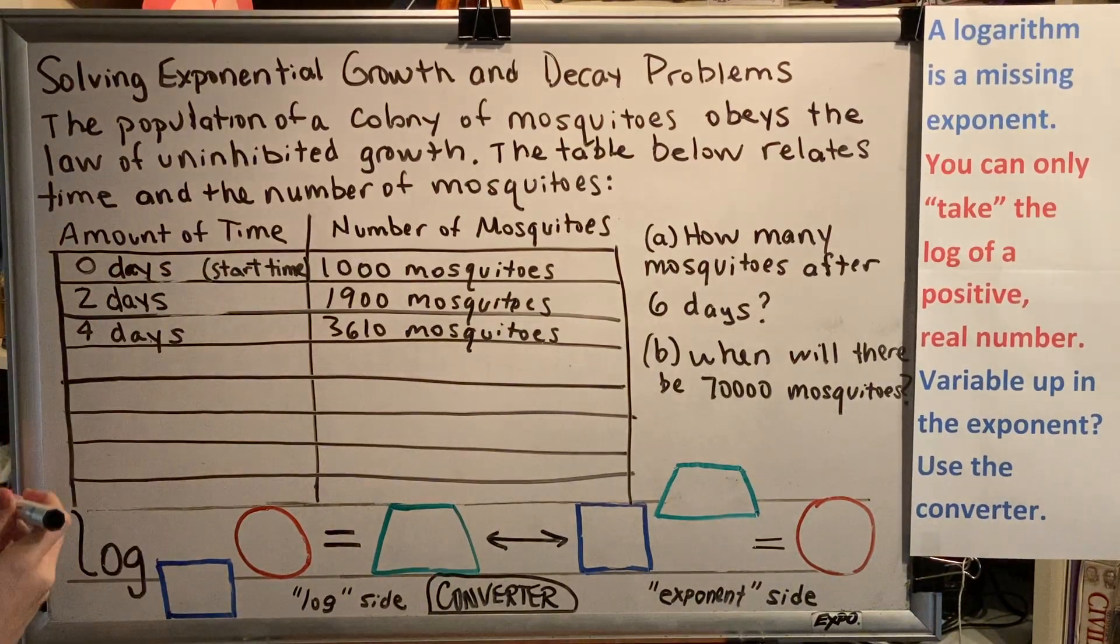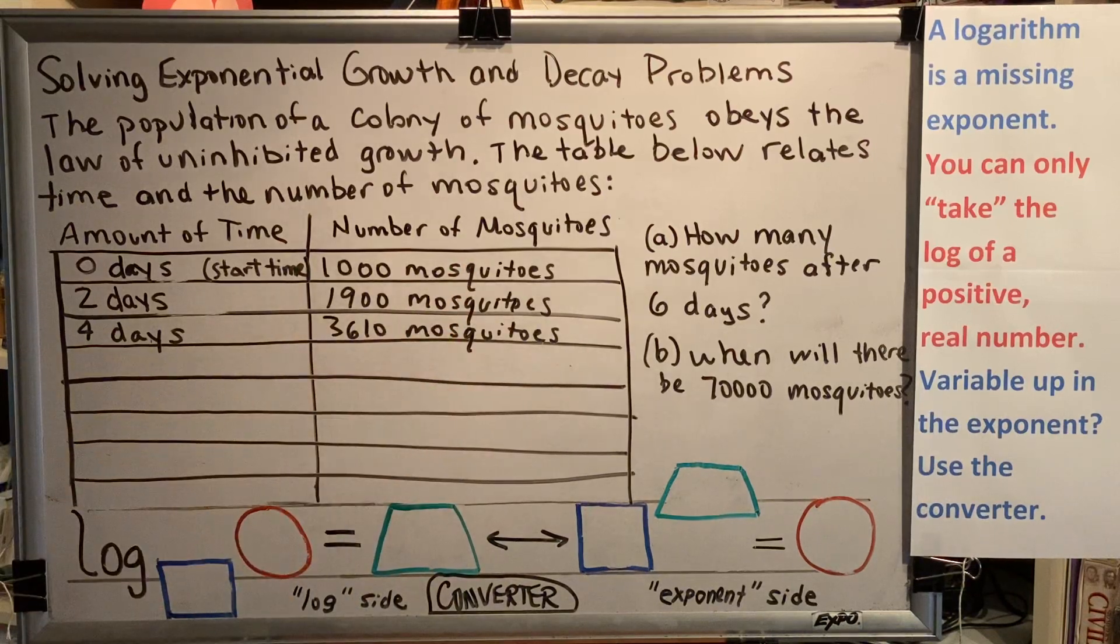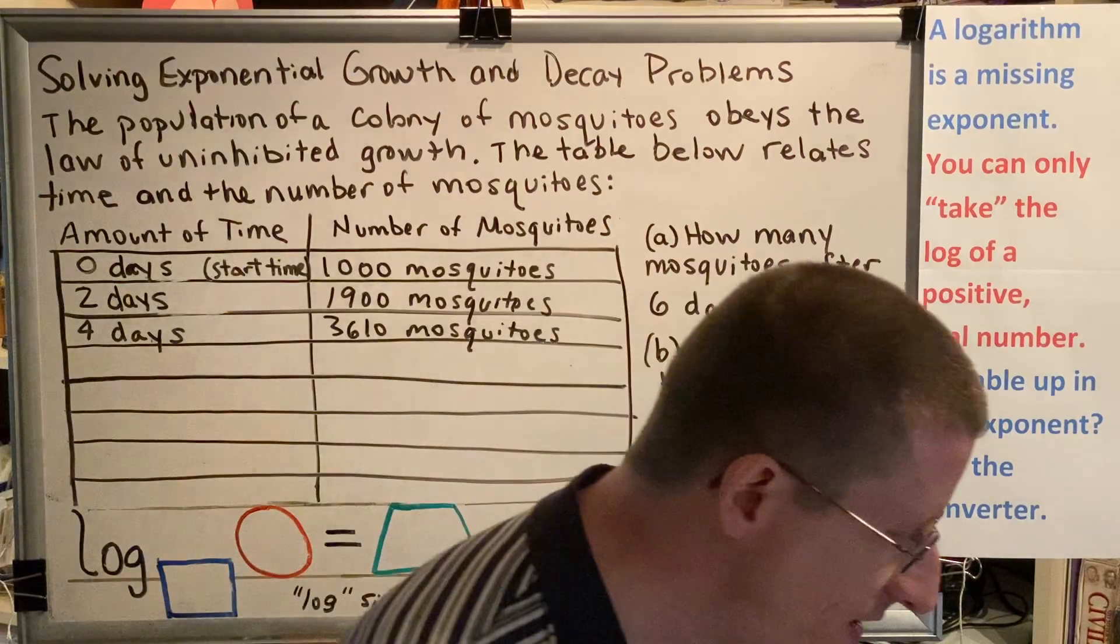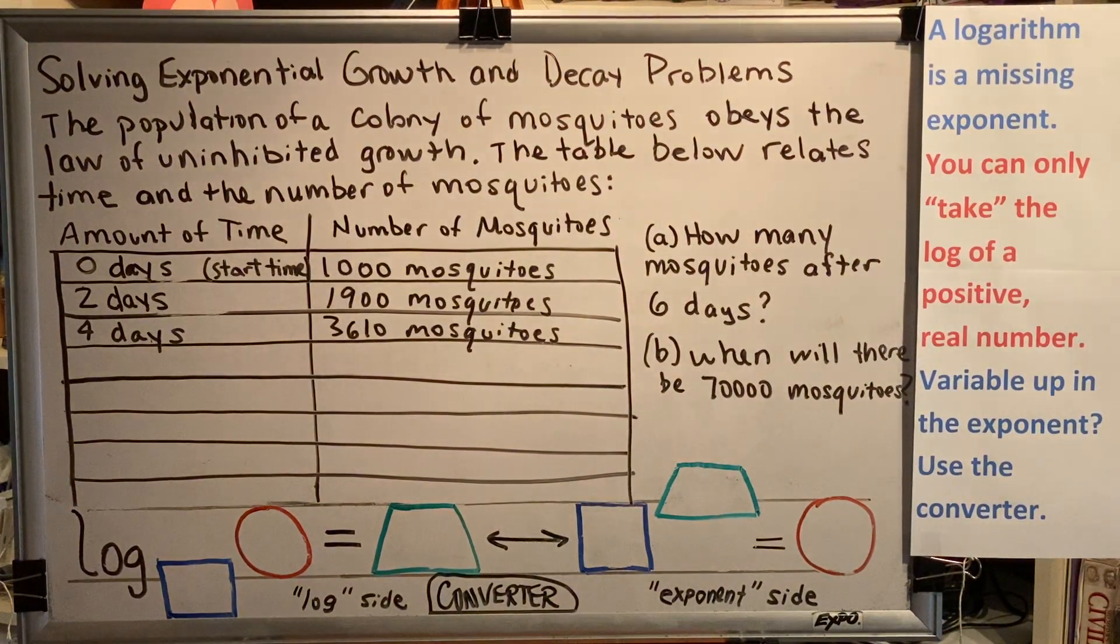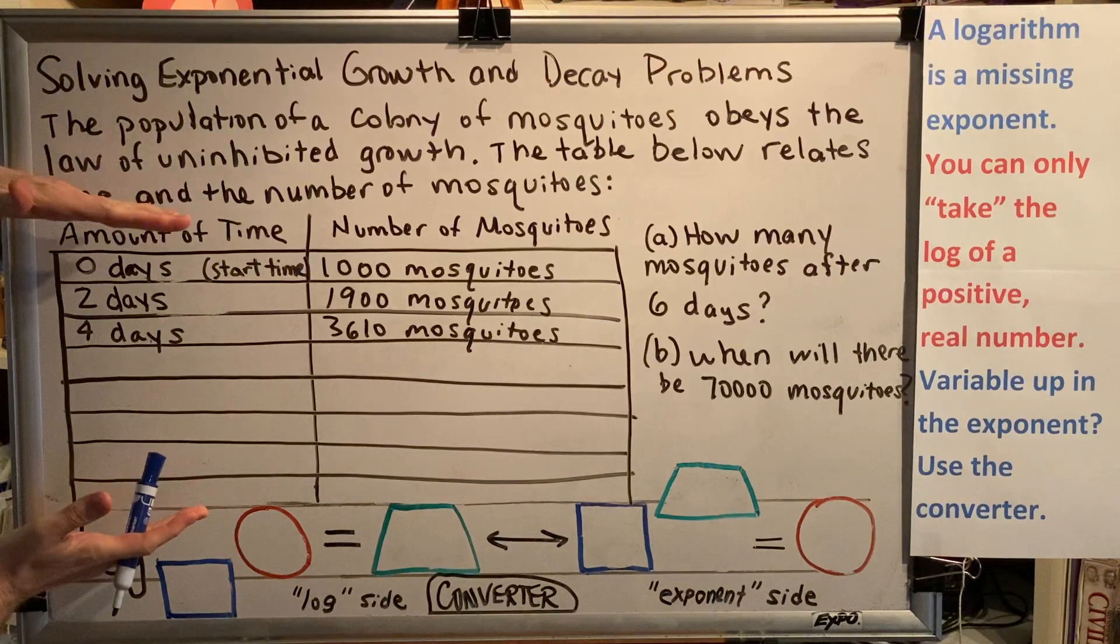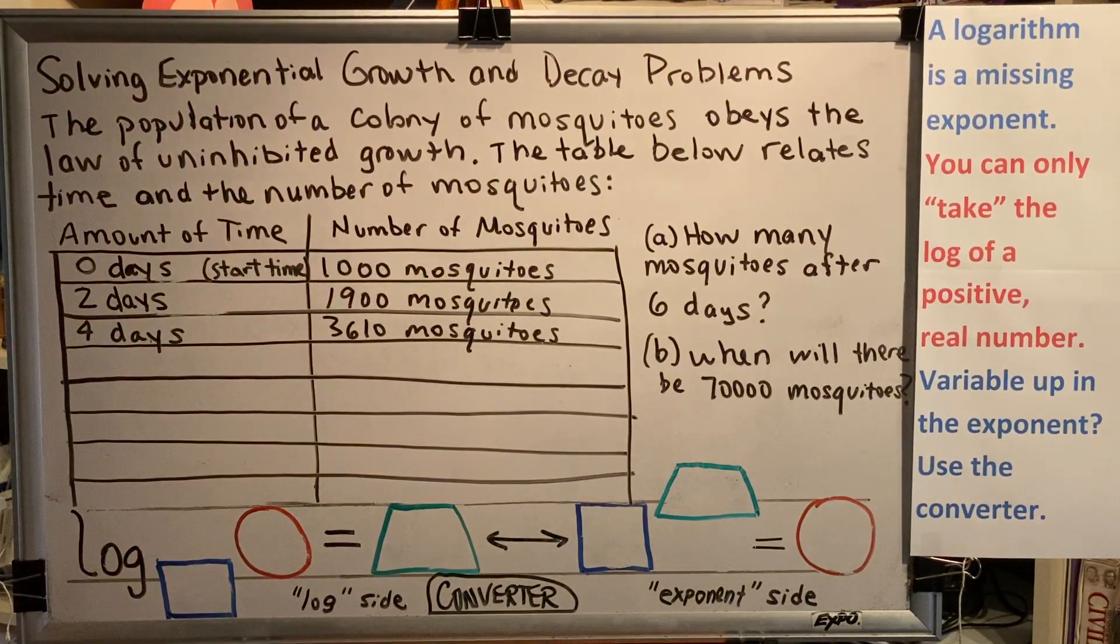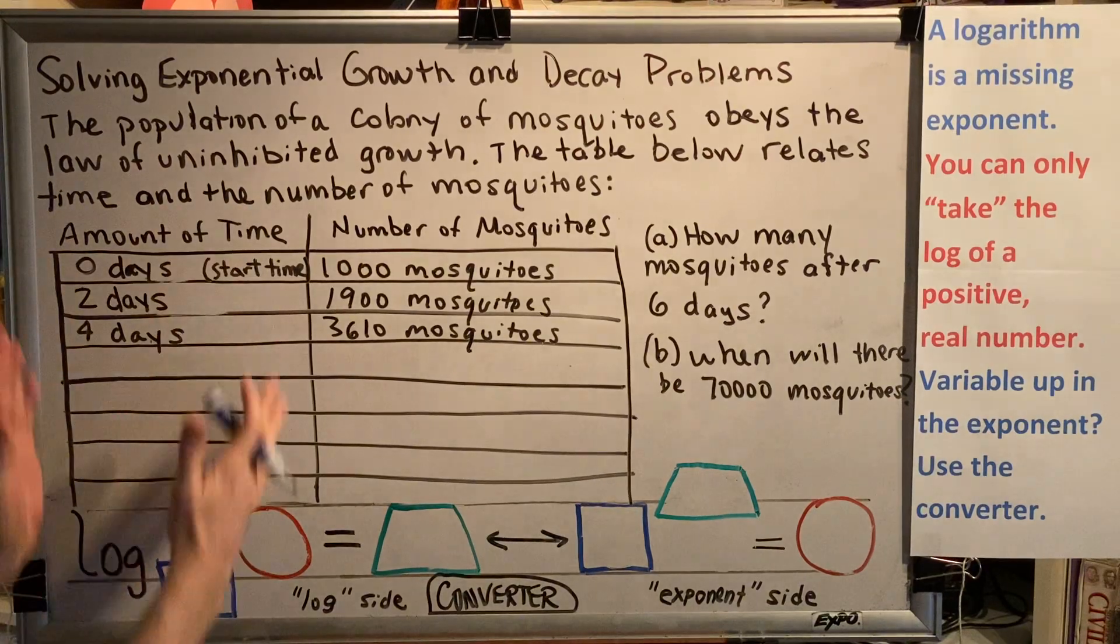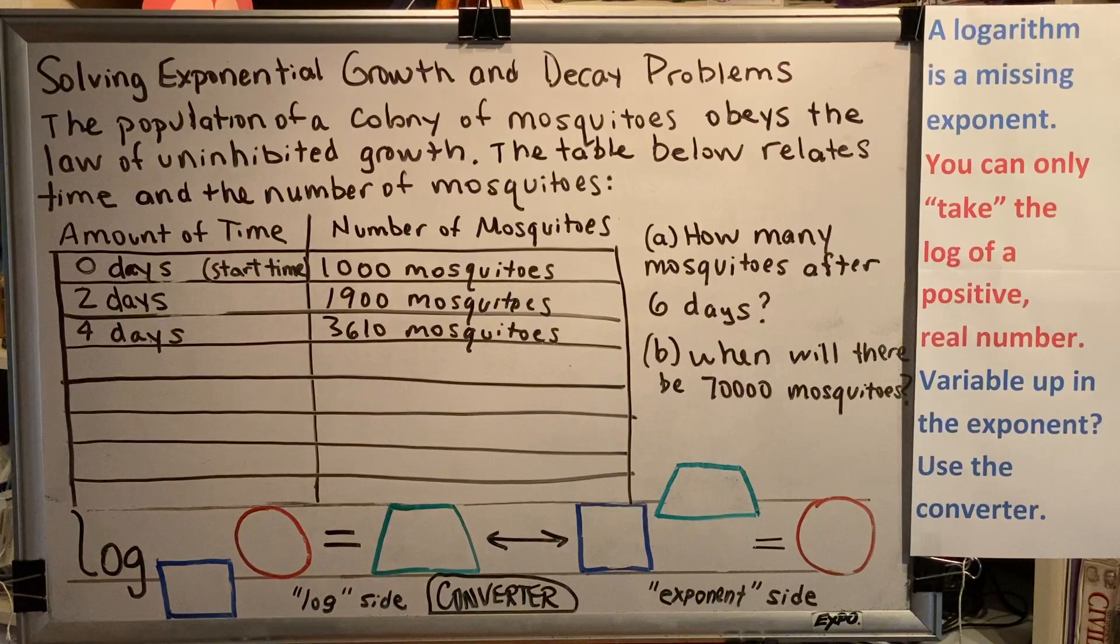Zero hours would also be zero days. It's the starting time, no matter how you measure it, whether it's minutes or hours or days, it's still zero. Now our time units are all consistent, and our quantities are consistent: mosquitoes, mosquitoes, mosquitoes. Now we have to start looking for a pattern.